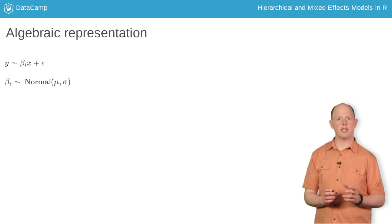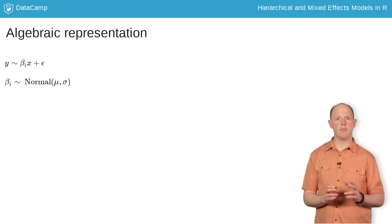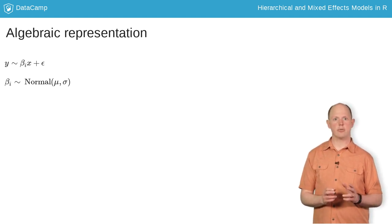This equation depicts a simple random effect. The equation on top is the relationship to the data given the i-th beta. The random effect assumes that beta is drawn from a normal distribution with the mean mu and the standard deviation sigma. This is the algebraic representation of the multilevel model.